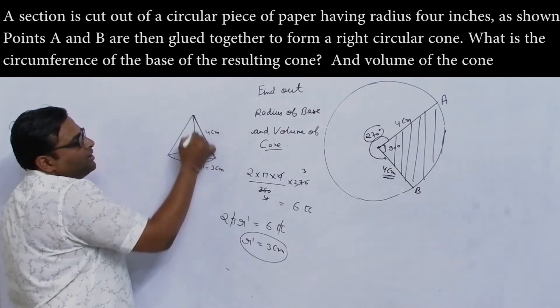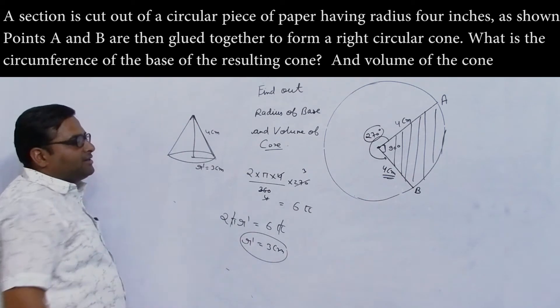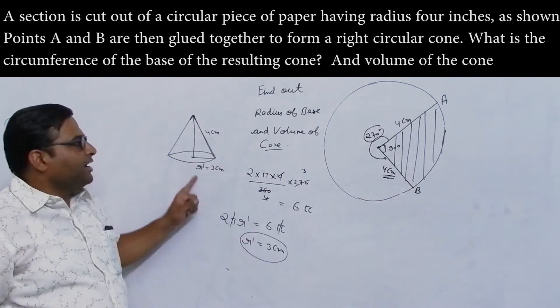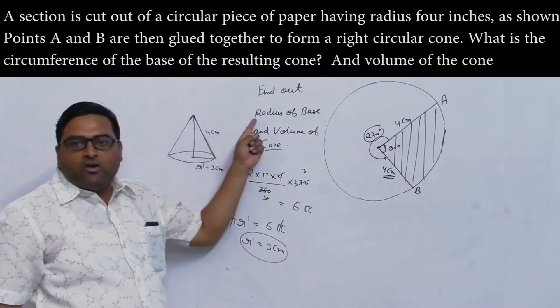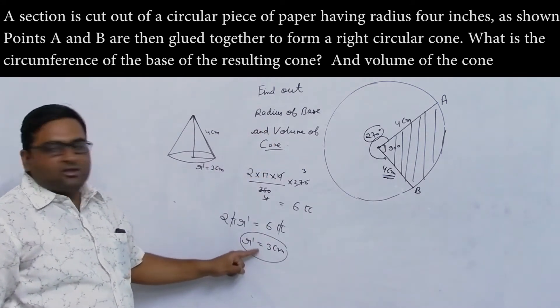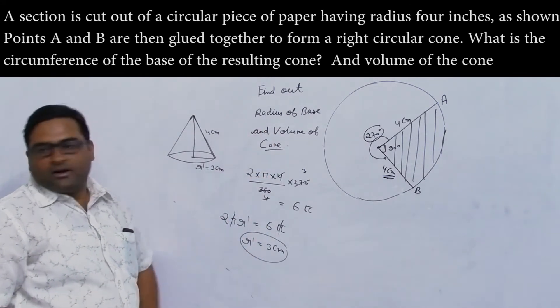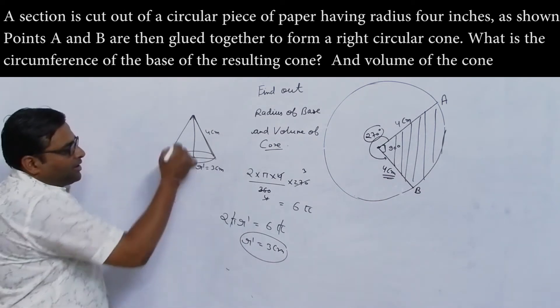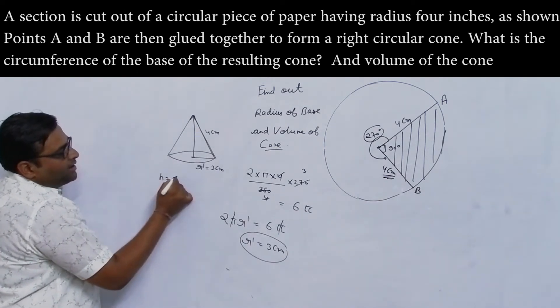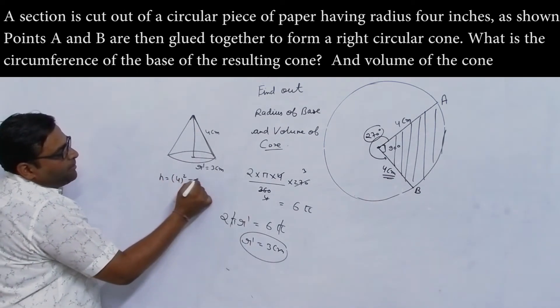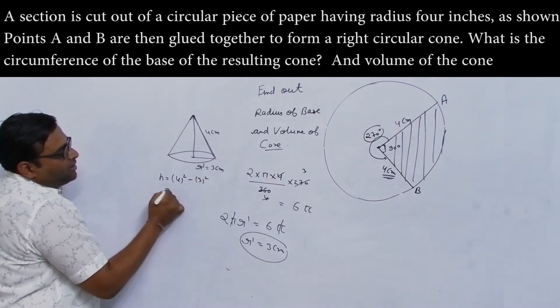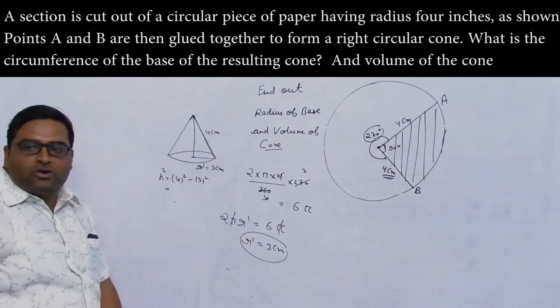There is 4 centimeters. Now I will tell you - using Pythagorean theorem, the height: h squared equals 4 square minus 3 square.